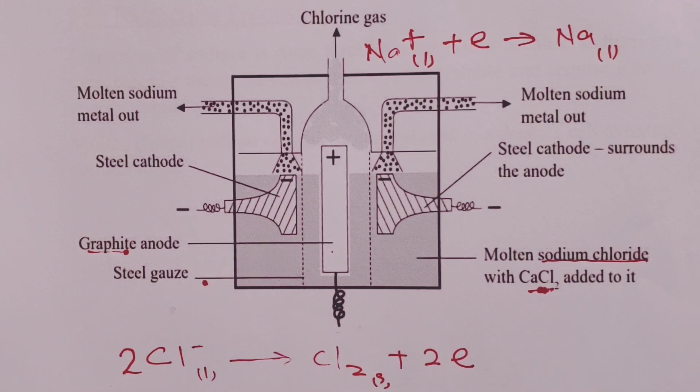One extra piece of information that I would want candidates to know is that calcium chloride, which we mix with our ore to reduce the melting point considerably and save on fuel costs, might introduce calcium ions in our electrolyte.